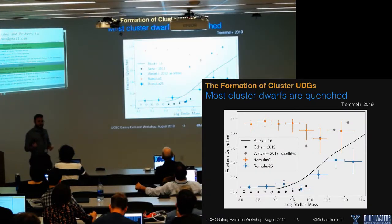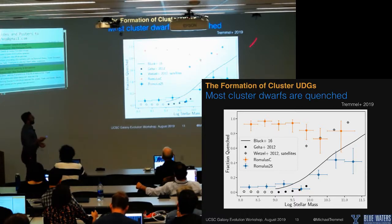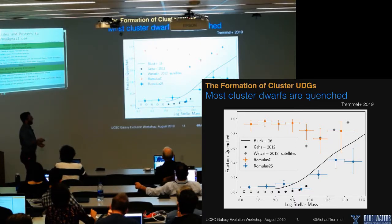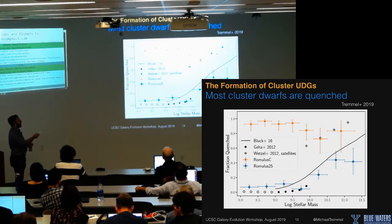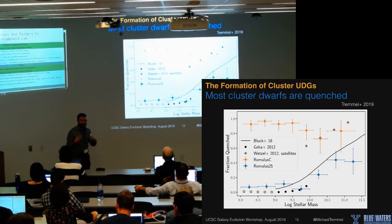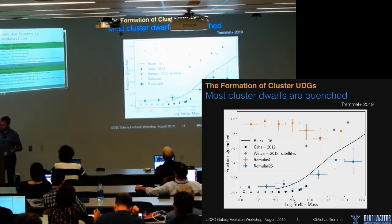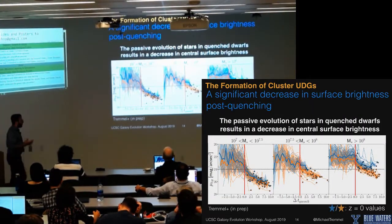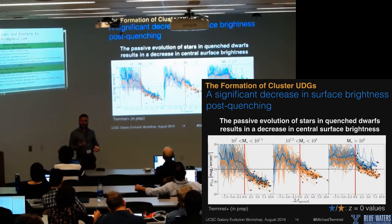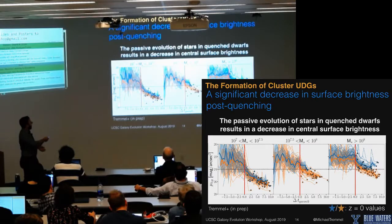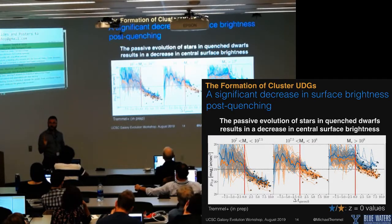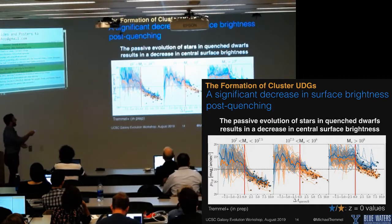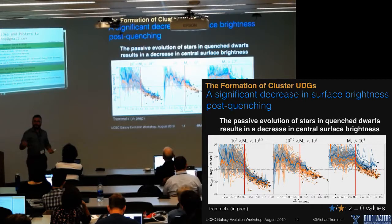One thing the cluster can do is quench galaxies. In isolation, low-mass galaxies are almost never quenched in the simulation, as expected from observations. But in the cluster environment, low-mass galaxies are almost always quenched. These low-mass galaxies are very sensitive to being quenched by being in such a dense environment. Prior to quenching, these galaxies are all far too bright — by one to two orders of magnitude — to be considered ultra-diffuse.